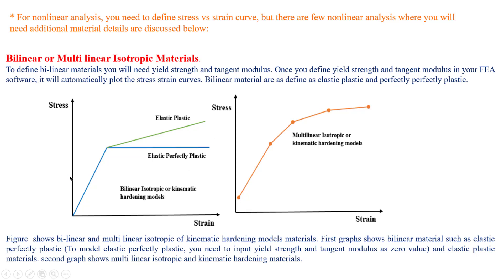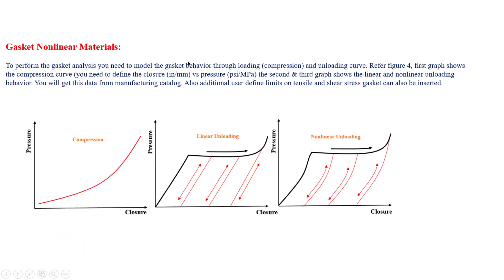The first curve is for bilinear isotropic materials and the second for multilinear isotropic materials with hardening. We also have gasket curves to account for compression loading conditions — these are curves related to the closing of gaskets under compression. If you are dealing with advanced analysis, these curves will help you get appropriate results.